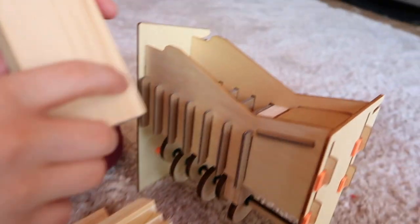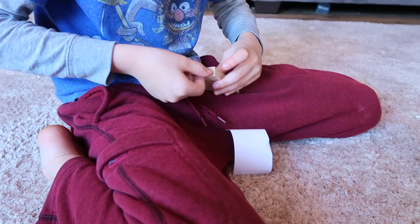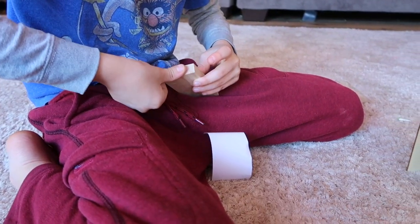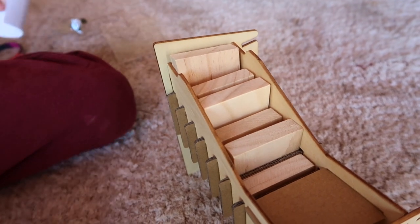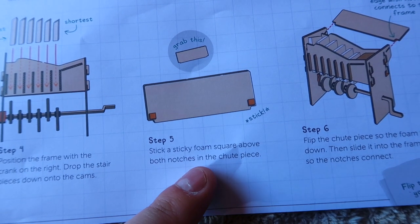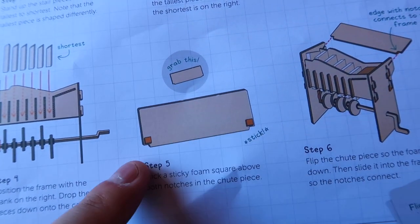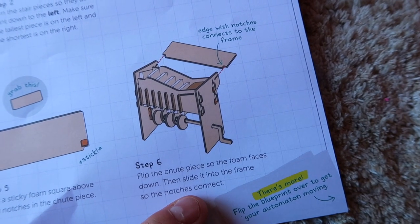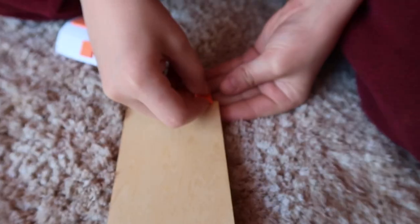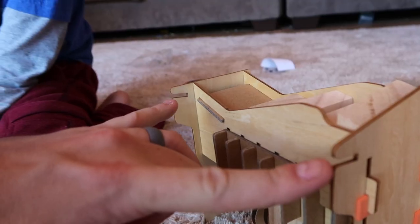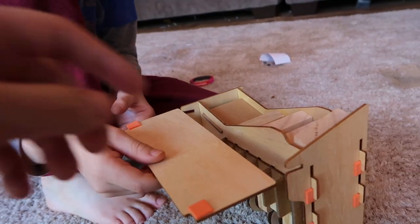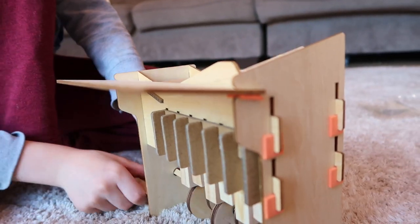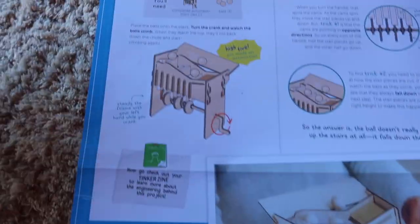Good job. Now where does it go? Last one is right. Good job. So in the next step, stick a sticky foam square above both notches of the shoot piece. And then flip the shoot piece so the foam faces down. And then slide it into frame so the notches connect. Go ahead and put those on there. Into these two notches right here. The foam facing down. So like that. Perfect. We're almost there.